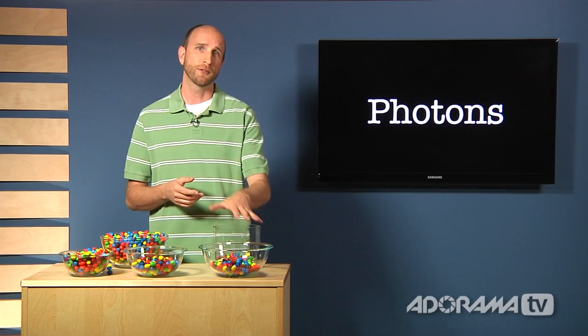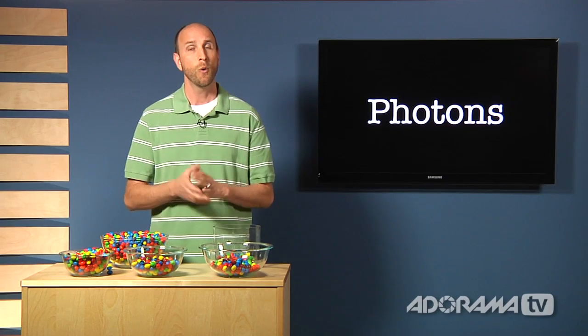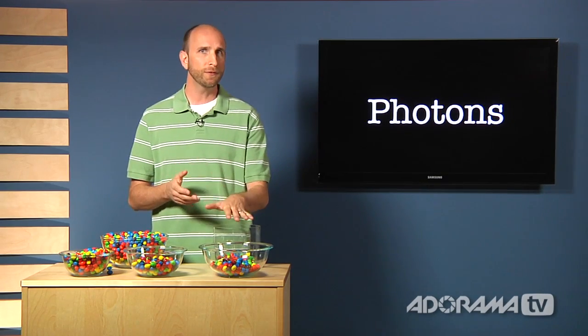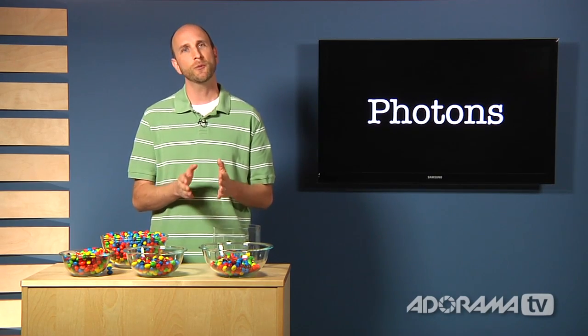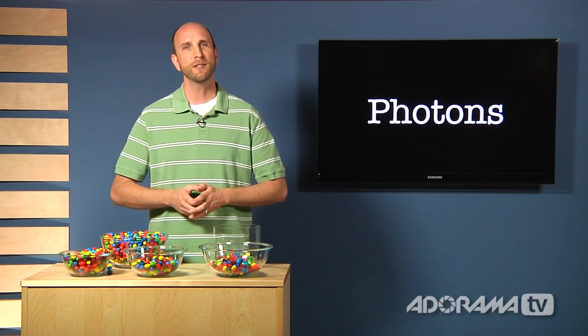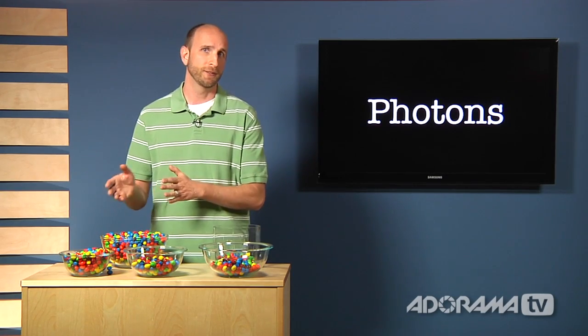Now if you want larger photosites on your sensor, you need to either have a very large sensor like a medium format camera or a full size sensor, or you need to put fewer photosites on the sensor that you do have. That means that sometimes a camera with lower resolution can produce images that are a little bit nicer than a camera with higher resolution.